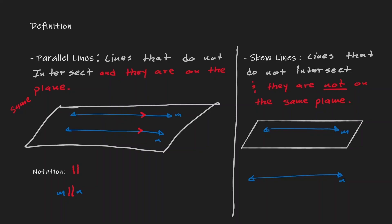So this is the main difference between the two. Parallel lines are two lines that are on the same plane and do not intersect with each other. Skewed lines are lines that still do not intersect with each other, but they are in different planes.